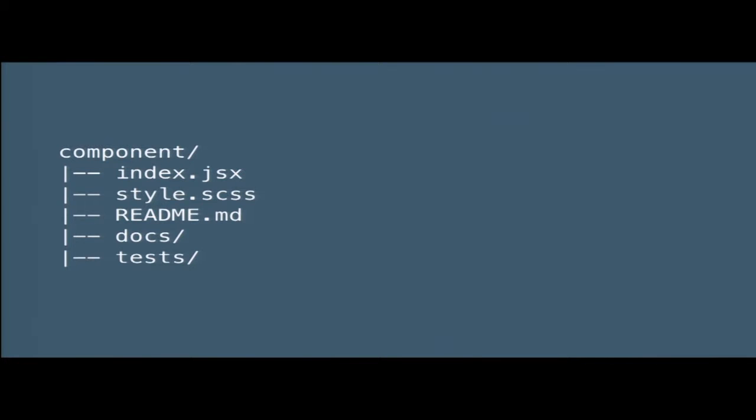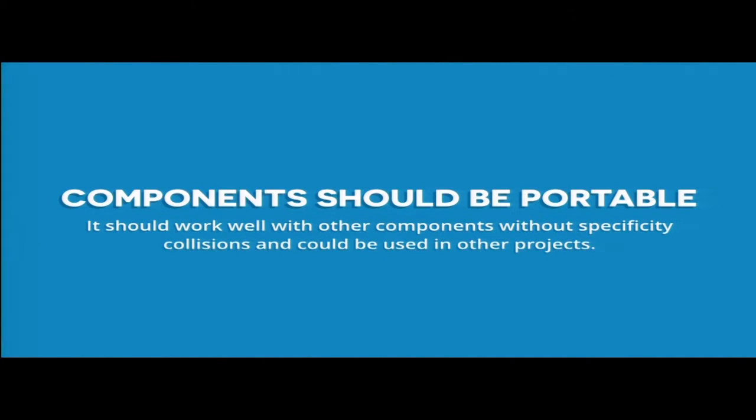Components can be really small — we have components for a button instead of styling the base element. Here's kind of what the folder structure looks like: you've got the component name folder, then an index.jsx and a style.scss for each component. We don't keep all styles together in one big style folder; instead we keep them with the component. It makes them pretty portable and easy to see everything going on at once. We also have a readme that talks about how to implement the component, plus some tests and docs.